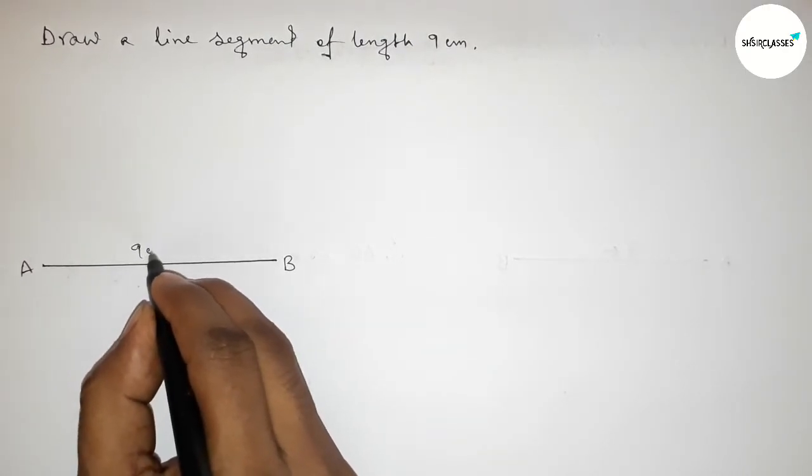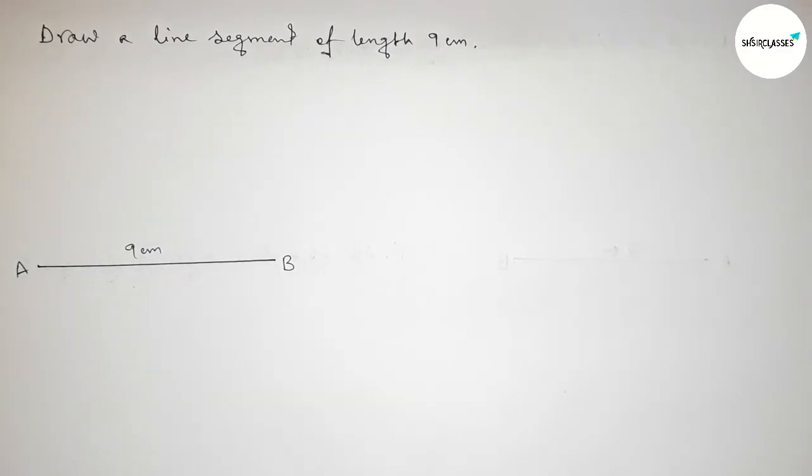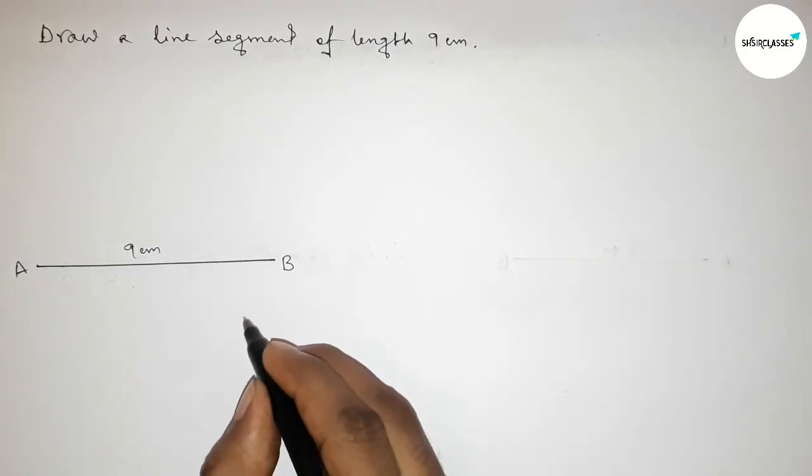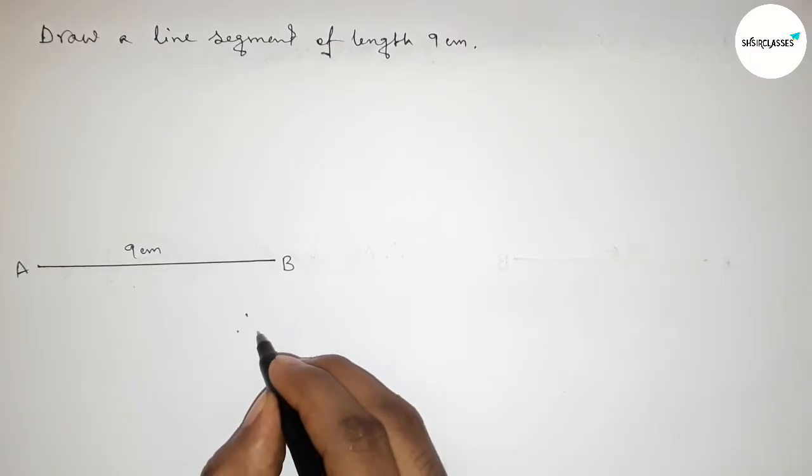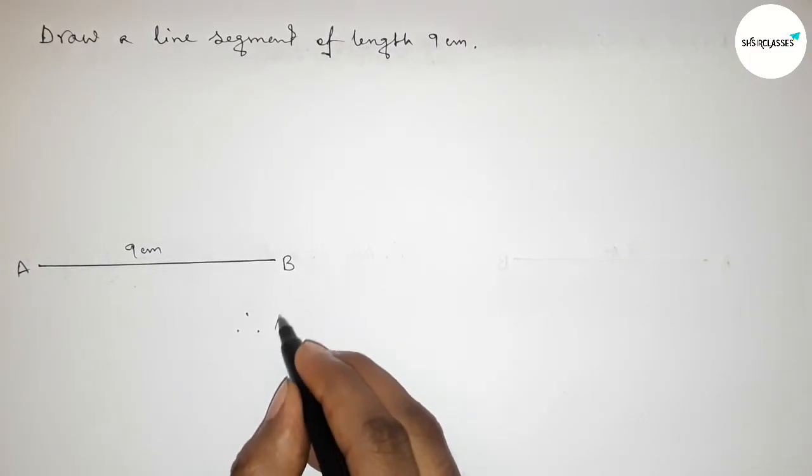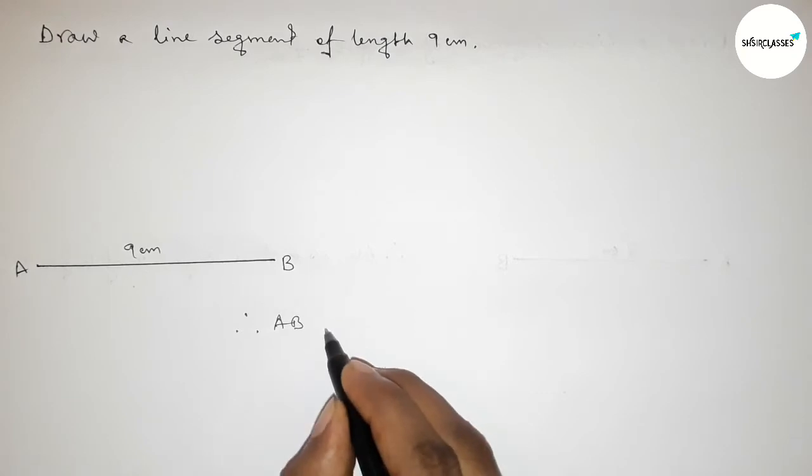So AB is a line segment of length 9 centimeters. Therefore, we can say that AB is a line segment of length 9 centimeters.